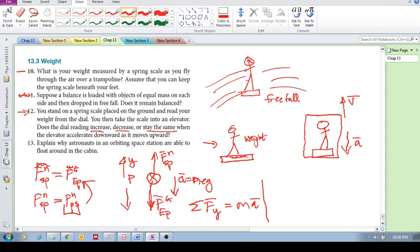Does the dial reading increase, decrease or stay the same? It decreases. So as there's a downward acceleration, there needs to be this vector sum of forces which is down. Which means that this force is smaller than this force, which means that the normal force of the person or your weight, the force of you onto the scale, is also smaller than this gravitational force.